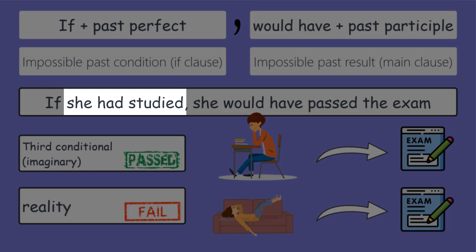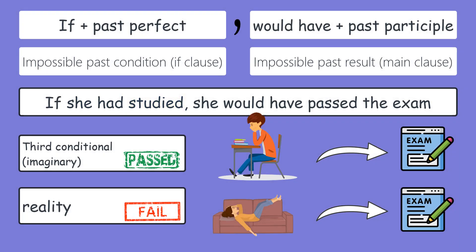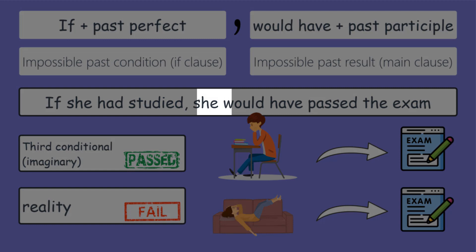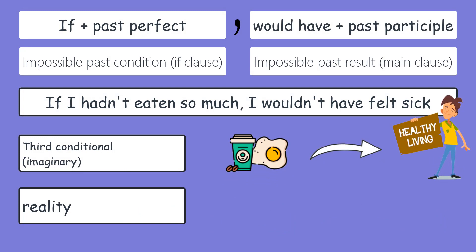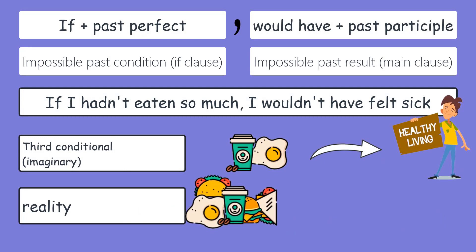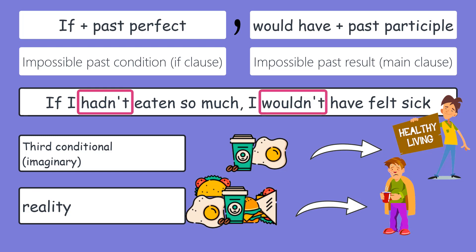Do you remember how we formulate the past perfect? For the main clause: subject, would have, past participle. If I hadn't eaten so much, I wouldn't have felt sick — but I did eat a lot, so I did feel sick. I have used negative structures for both the if clause and the main clause: hadn't, wouldn't.